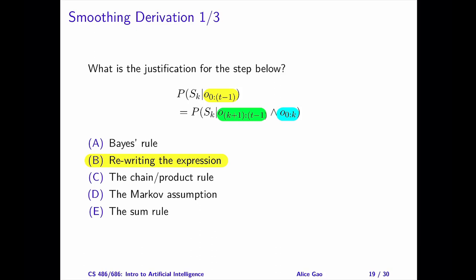If you imagine that you're on day k right now, then the two sequences correspond to past observations from the start up to yesterday, which was day k, and future observations from day k plus 1 to the end.